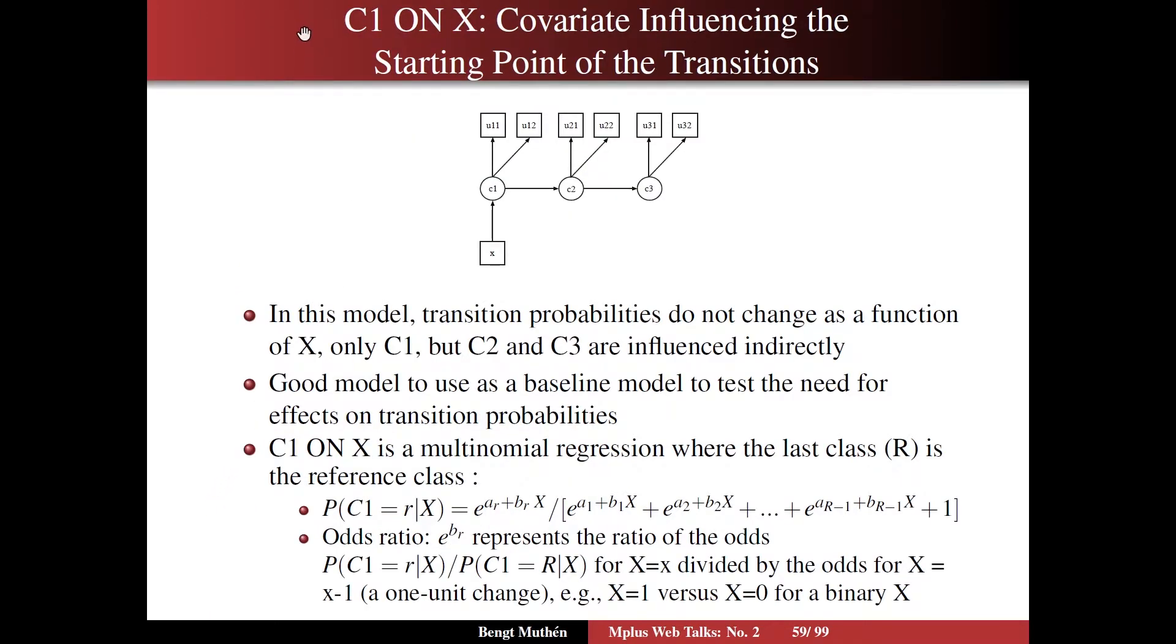Looking at C1 on X, that's covariate influencing the starting point. I think it's a good model to use as a baseline model. You include X, but you don't necessarily include all the effects that X could have. So C on X is then a multinomial logistic regression because C1 is nominal. And as usual, the last class is the reference class.